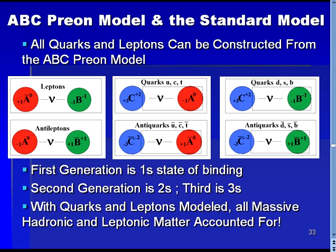The up, charm, and top quarks are identified as a bound state of an A-prion to a portion of a C-prion, while the down, strange, and bottom quarks are identified as a bound state of a B-prion with a portion of a C-prion.